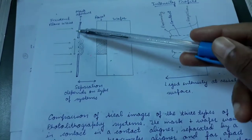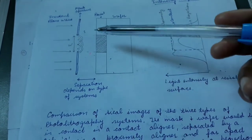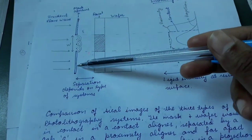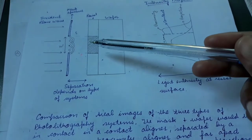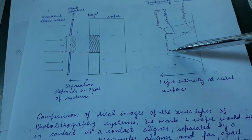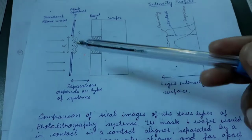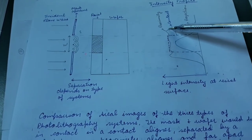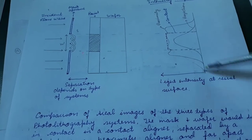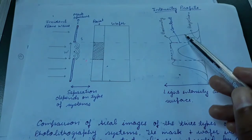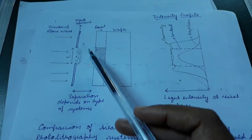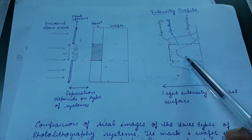The intensity profile of the three types of printing can be shown with the mask, resist, and wafer. In contact printing, because the mask is in contact with the resist there will be no diffraction effect, so the edges of the light striking the resist will be a straight line, giving a sharp profile. In proximity printing, due to diffraction at a certain distance, the intensity profile spreads. In projection printing with a lens, the projected image is demagnified, giving a narrower profile.